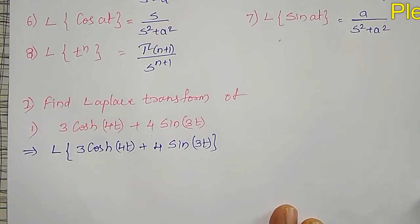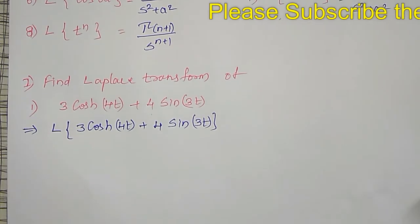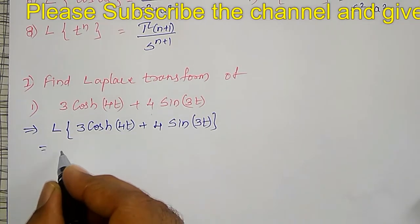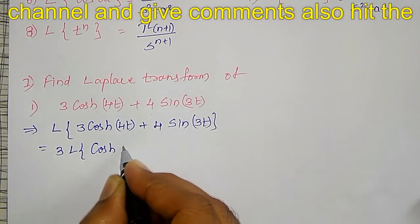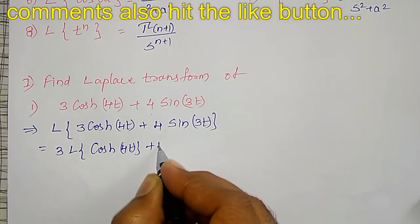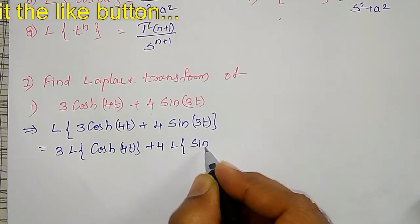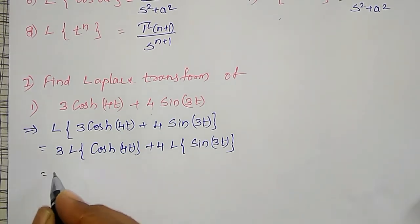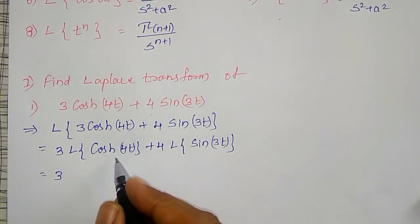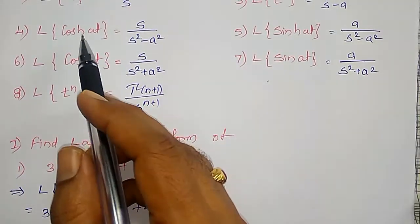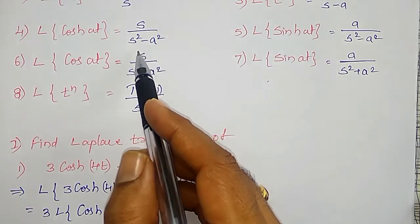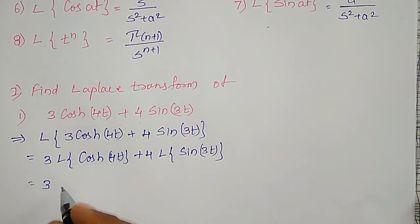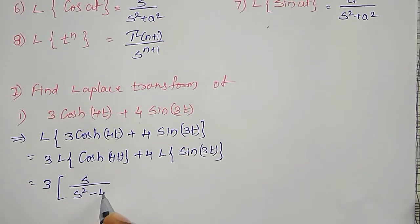We observe that this is the addition of two functions, so by the linear property we can apply separate Laplace transforms. This equals 3 times the Laplace transform of cosh(4t) plus 4 times the Laplace transform of sin(3t). The Laplace transform of cosh(at) is s divided by (s squared minus a squared), and here a equals 4, so it becomes s divided by (s squared minus 16).